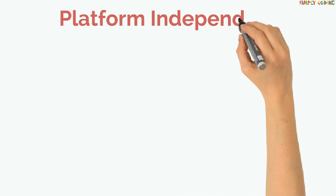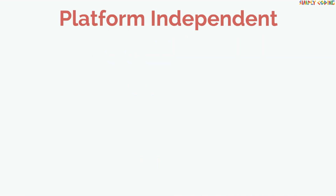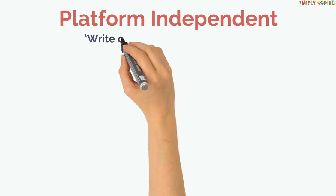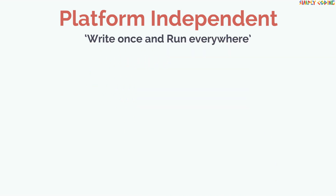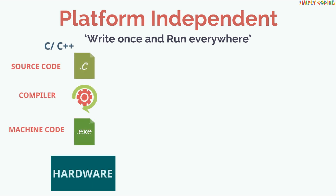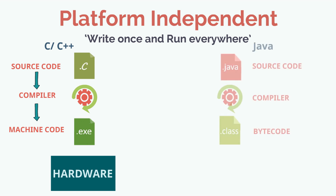Java was developed to provide a platform-independent programming language. Platform-independent means that Java was designed with the concept of write once and run everywhere. Unlike many other programming languages, including C and C++, where after compilation machine code is generated, in Java source code is compiled into platform-independent bytecode.